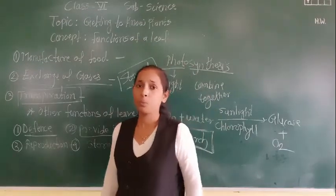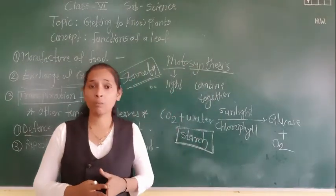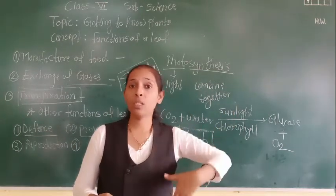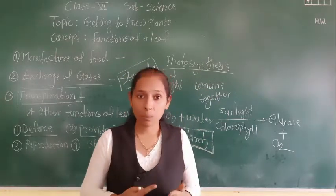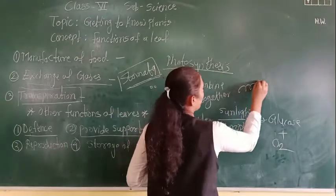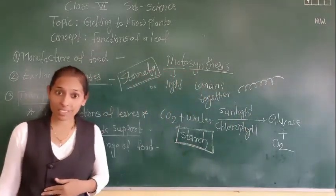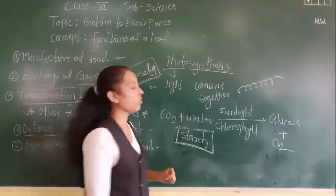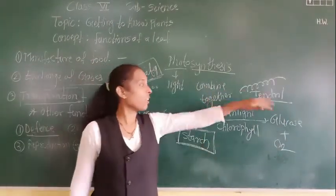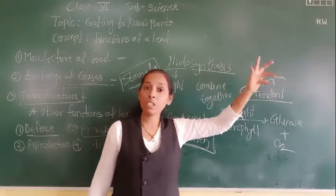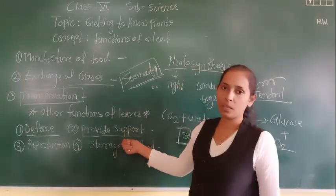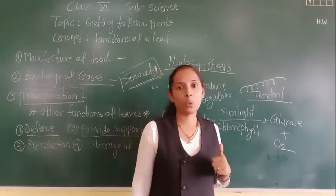The next function is to provide support. There are certain plants whose stem is very weak — for example, the pea plant. Its stem is too weak, so it cannot climb or stand on its own. To give extra support to such plants, the leaves or leaflets are converted into a coil-like structure called a tendril. These leaf tendrils coil themselves around certain supports and give additional support to the weak stem of the plant.